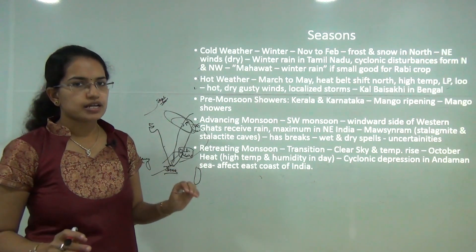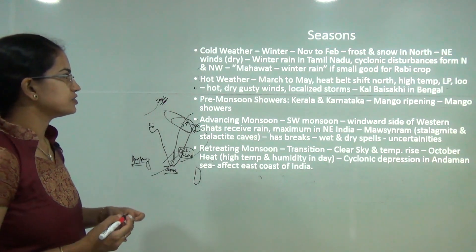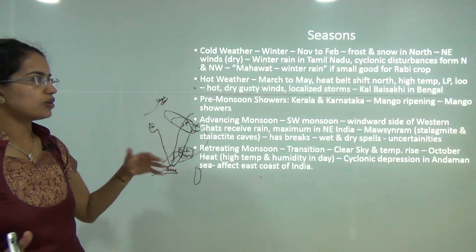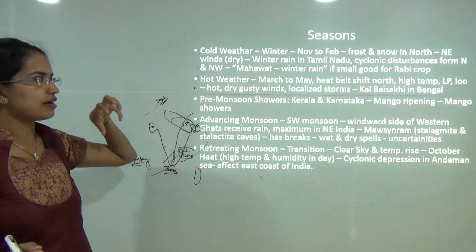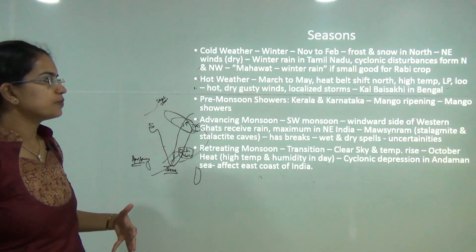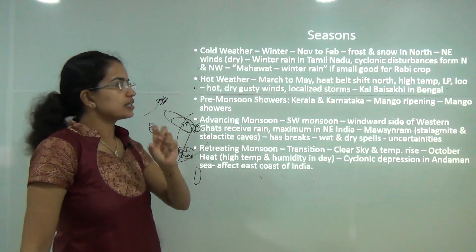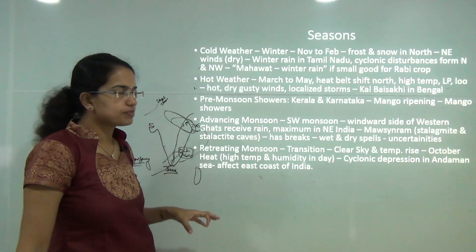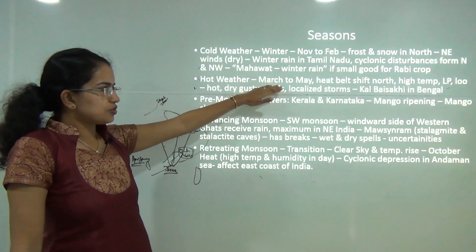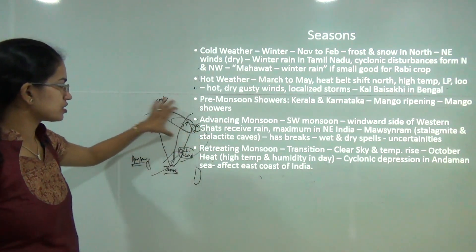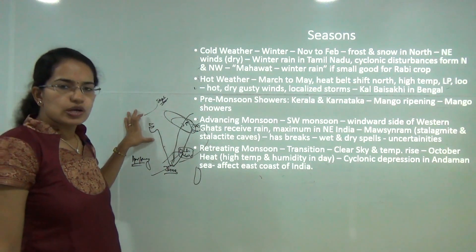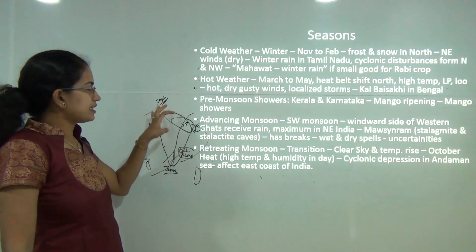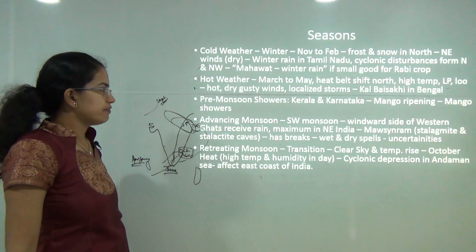There are four seasons based on the Indian climate. The first is cold weather, from November to February, with snow and frost in the north and northeast, dry winds, and winter rainfall in Tamil Nadu. A small quantity of this winter rainfall is known as Mahavad, which is good for Rabi crops. Hot weather runs from March to May, with a local dry and gusty wind called 'Loo,' leading to localized storms like Kalbaisakhi in West Bengal.